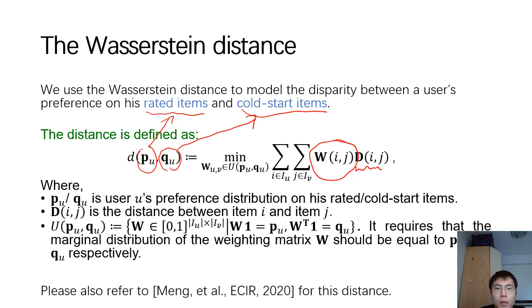d_ij is the distance between item i and item j, and the constraint here means the marginal distribution of W should equal to p_u and q_u respectively.